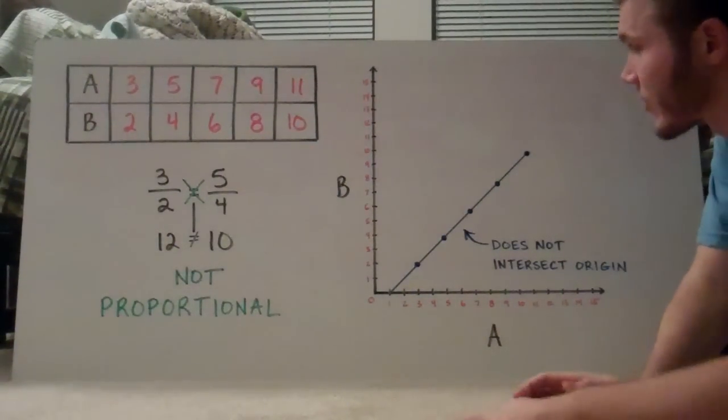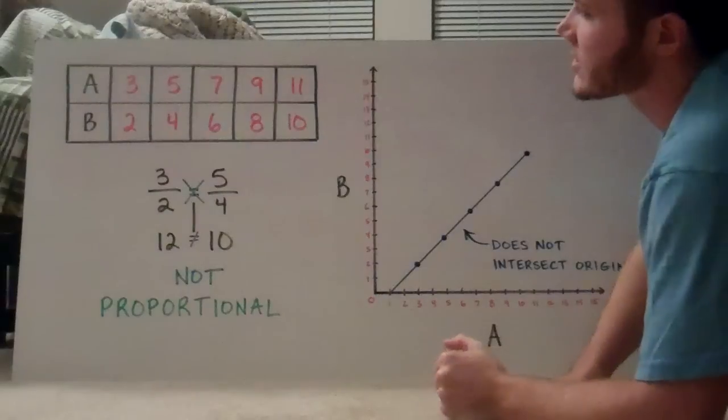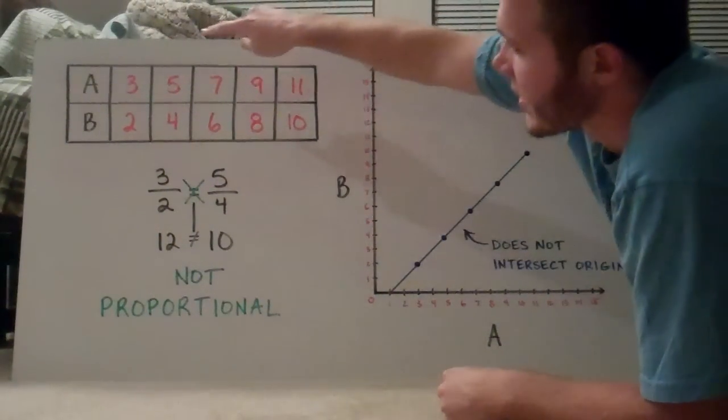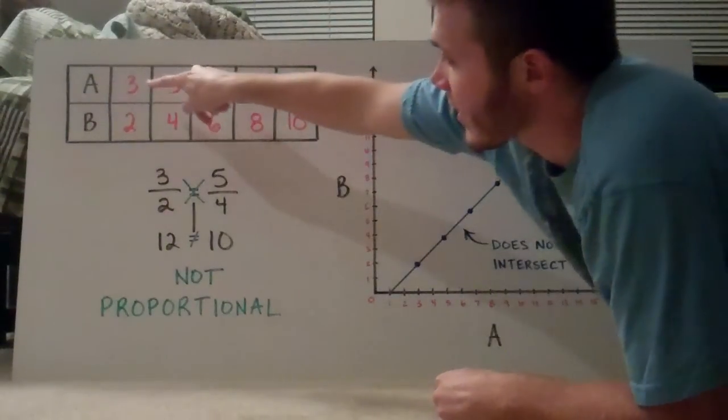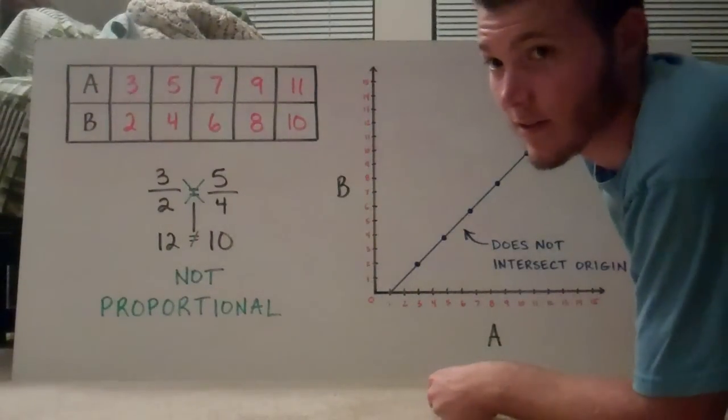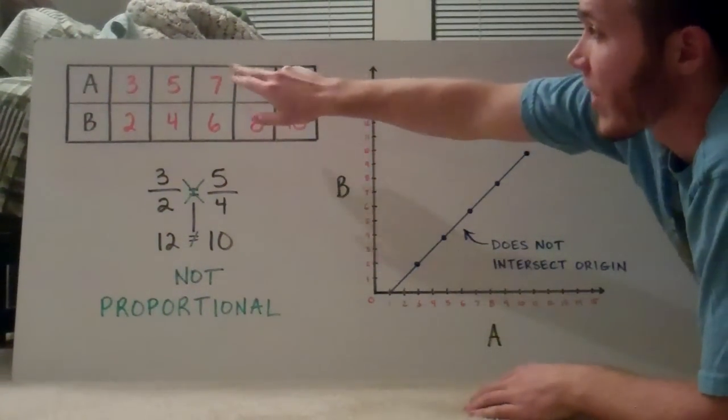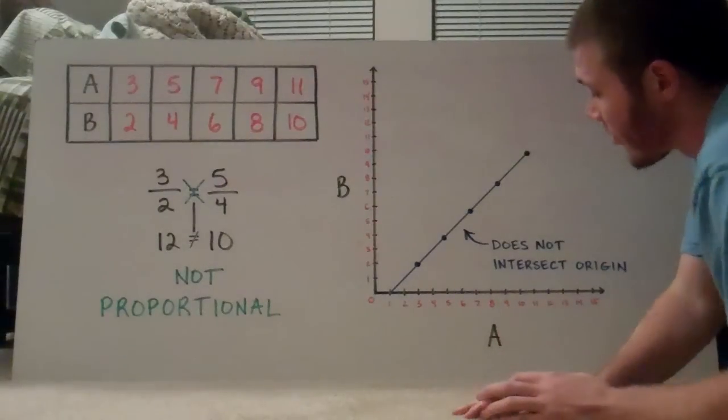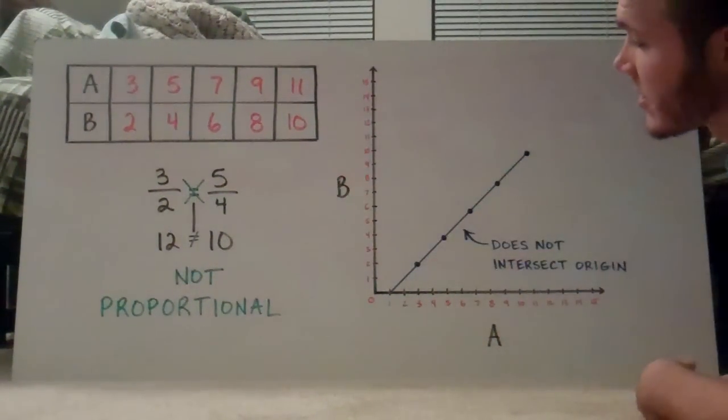So for example, instead of x and y, we're using a and b. So let's say values for a: a is 3, 5, 7, 9, and 11. And for every a value there's a b value. B is 2, 4, 6, 8, 10. Let's say I want you to graph those values. We'll call this the a-axis and this the b-axis.